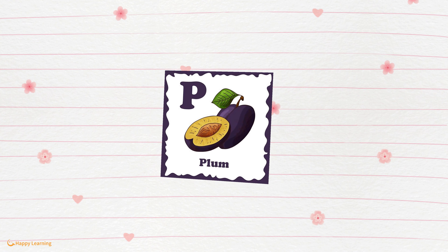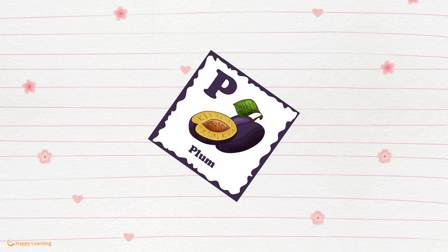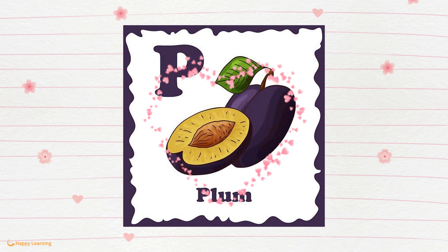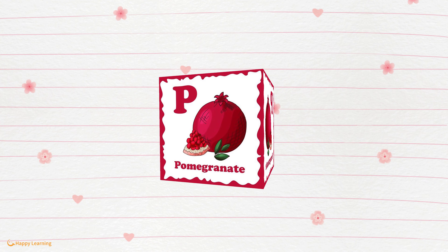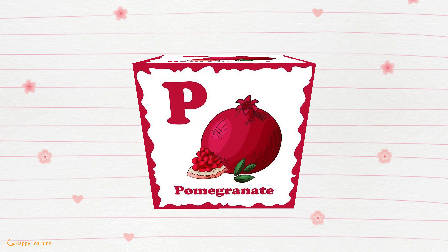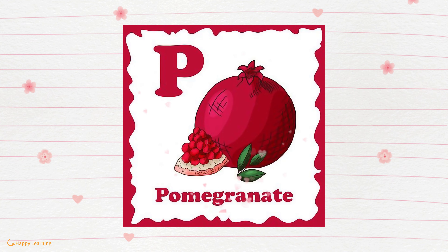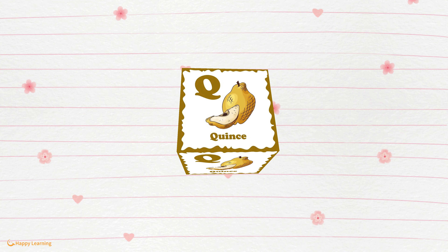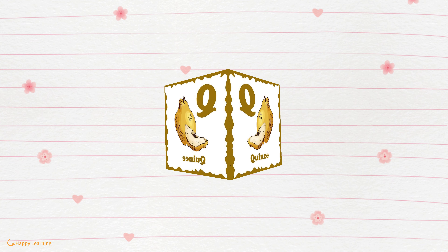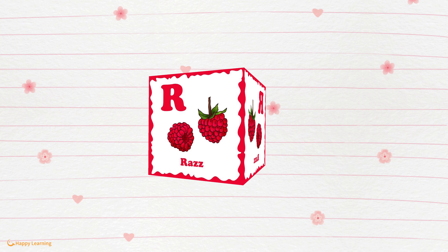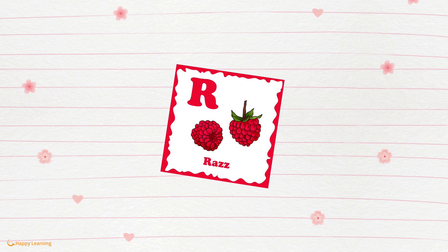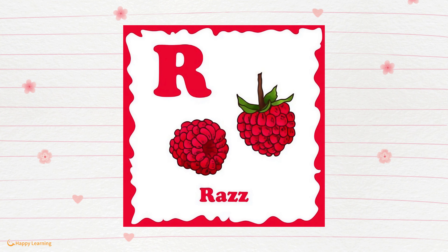P is for Plum. P is for Pomegranate. R is for Raspberry.